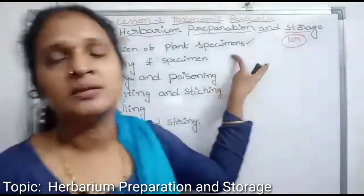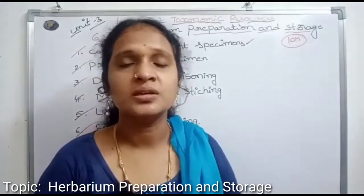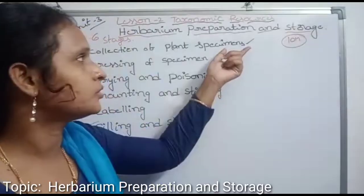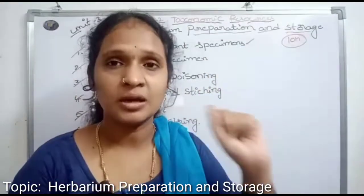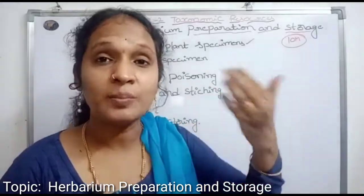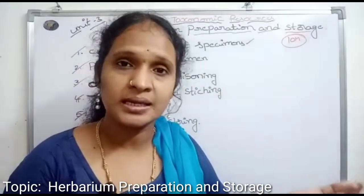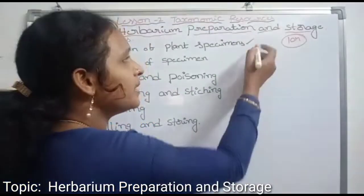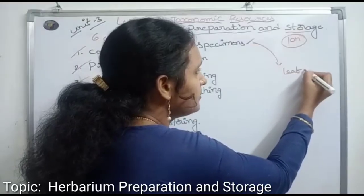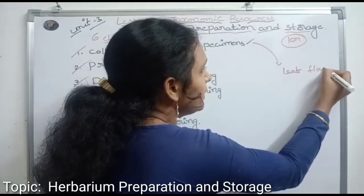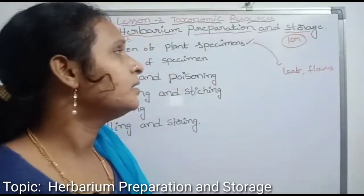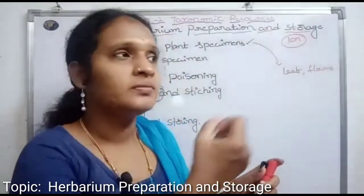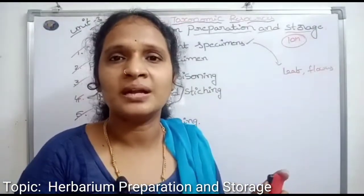Step 1: Collection of plant specimens from different localities and habitats. These collected plant specimens should bear leaves and flowers. For herbaceous plants, we collect the entire plant body including the underground parts.